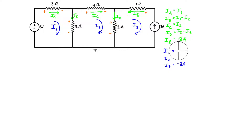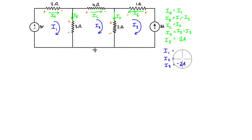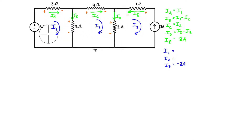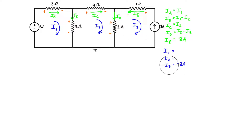At this point we have two unknowns: i1 and i2 — we don't know what they are yet. We need to do KVL for all loops to find them. We have to do KVL for loop one and loop two; we don't have to do it for loop three because we already know i3. So let's get started with KVL for loop one.